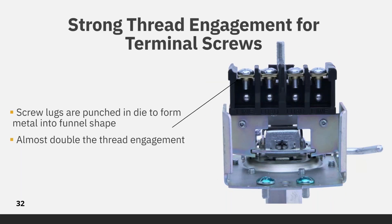Another common issue with import switches is that the threads strip in the brass terminal screw lugs which are drilled. This leaves a thin cross section and little thread engagement for the terminal screws. With Beauchart standard switches, the terminal screw lugs are form-punched with a die that displaces the metal and doubles the thread cross section. This increases the number of engaged threads from 2 to 4. Since this change was made many years ago, there has not been a single report of a stripped thread.